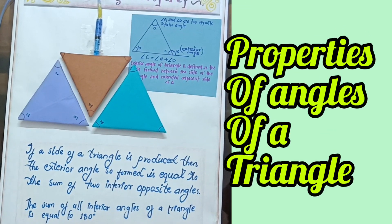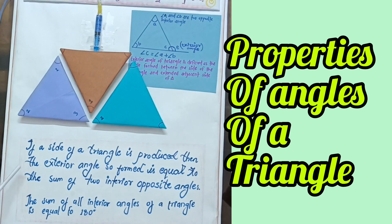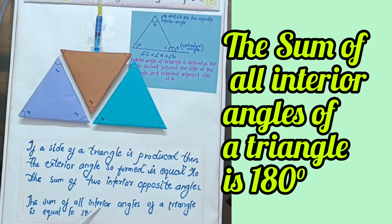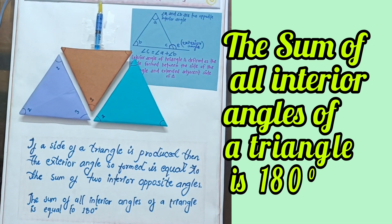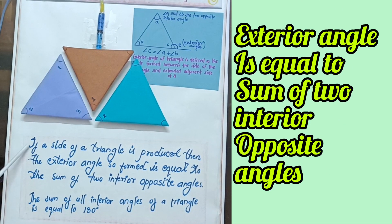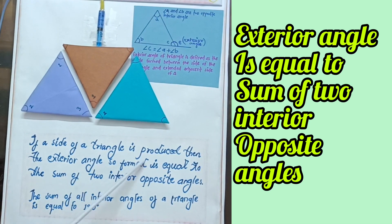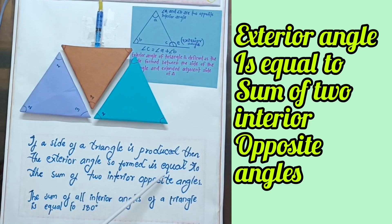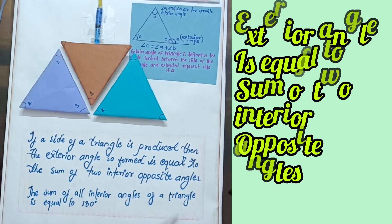By this activity, I want to show two important properties of a triangle. First one is: the sum of interior angles of a triangle is equal to 180 degrees. And second one is: if a side of a triangle is produced, then the exterior angle so formed is equal to the sum of the two interior opposite angles.